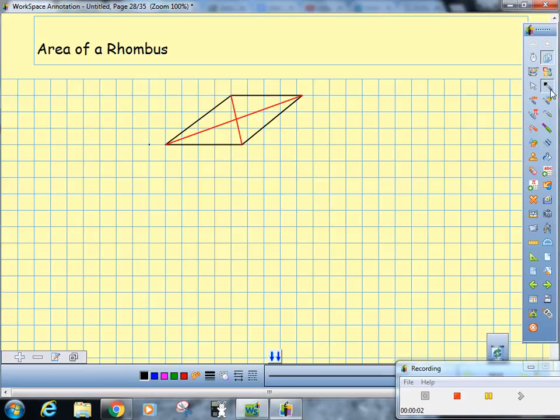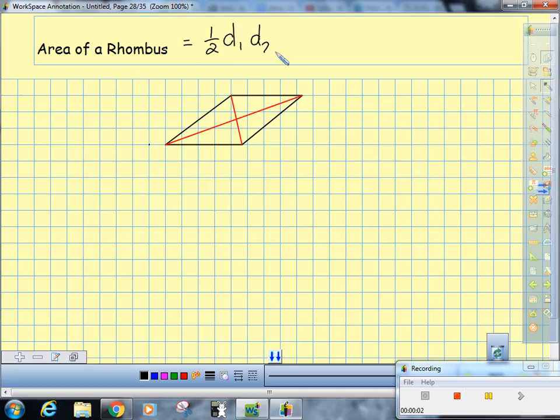Alright boys and girls, welcome back to the drive-through. Special shout out to rhombi. Very similarly to kites, the area of a rhombus is equal to one-half d1 times d2. Well, you might be thinking...